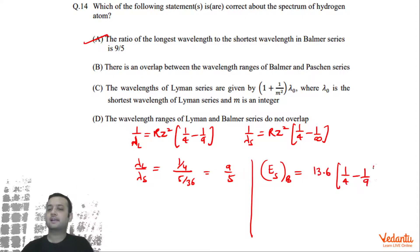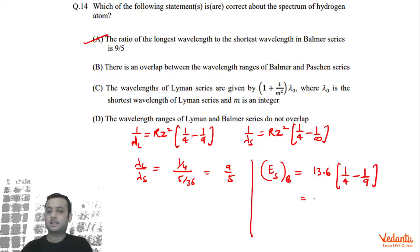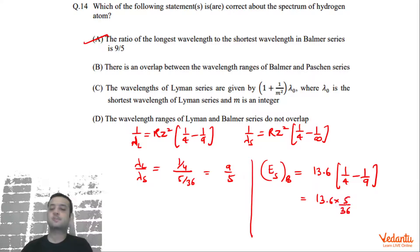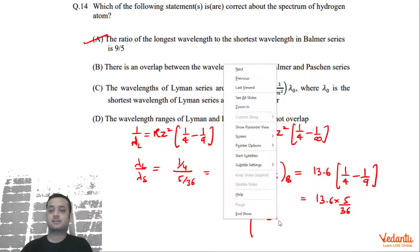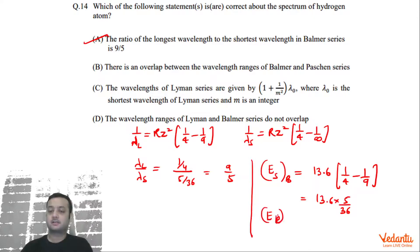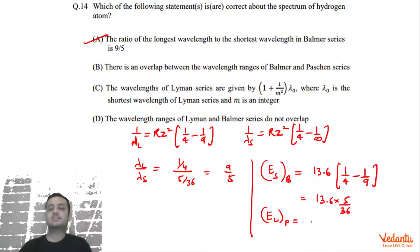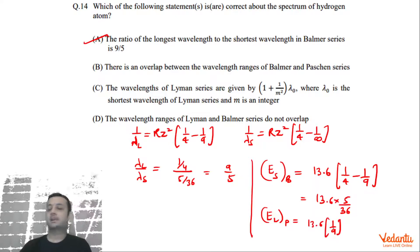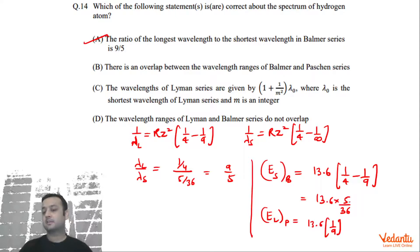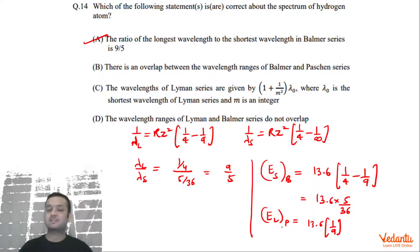The smallest energy of Balmer is when the transition happens from n = 3 to n = 2, giving E = 13.6 × (1/4 − 1/9) = 13.6 × 5/36. The largest possible energy of the Paschen series is when the transition goes from infinity to n = 3, giving 13.6 × 1/9 = 13.6 × 4/36. Since Balmer's smallest energy (5/36) is greater than Paschen's largest energy (4/36), the Balmer series has higher energies overall, meaning their wavelength ranges do overlap — Paschen has longer wavelengths than Balmer's longest. So Option B is correct.